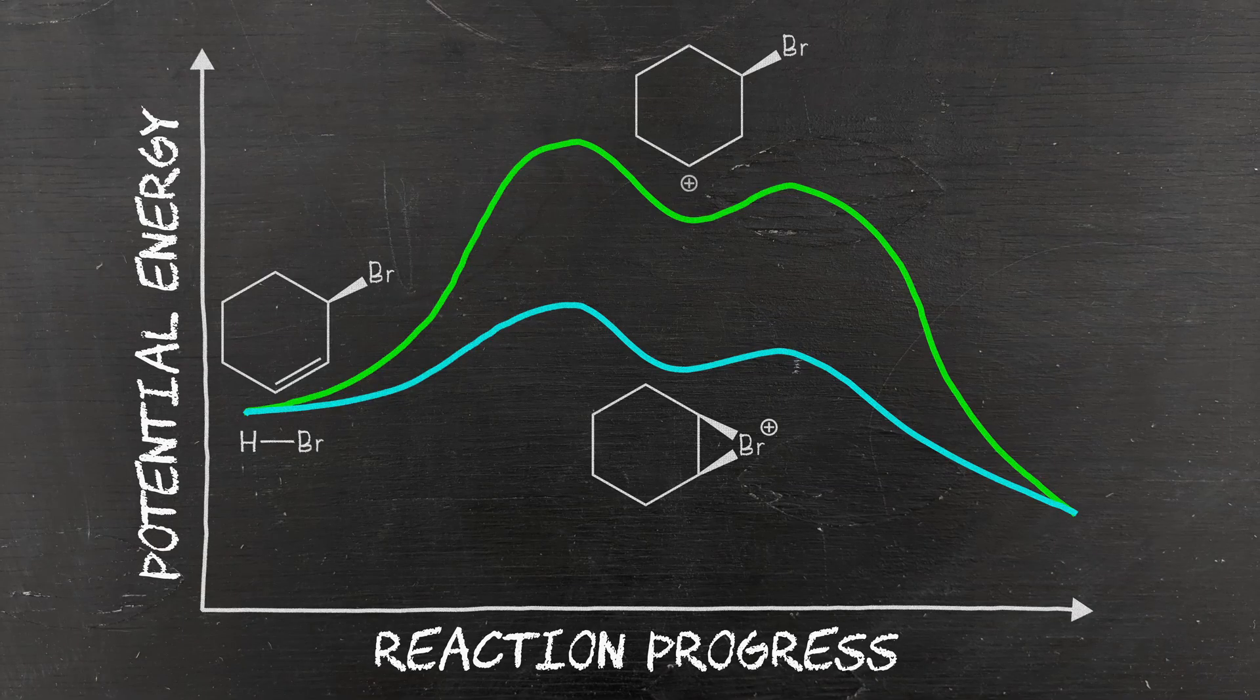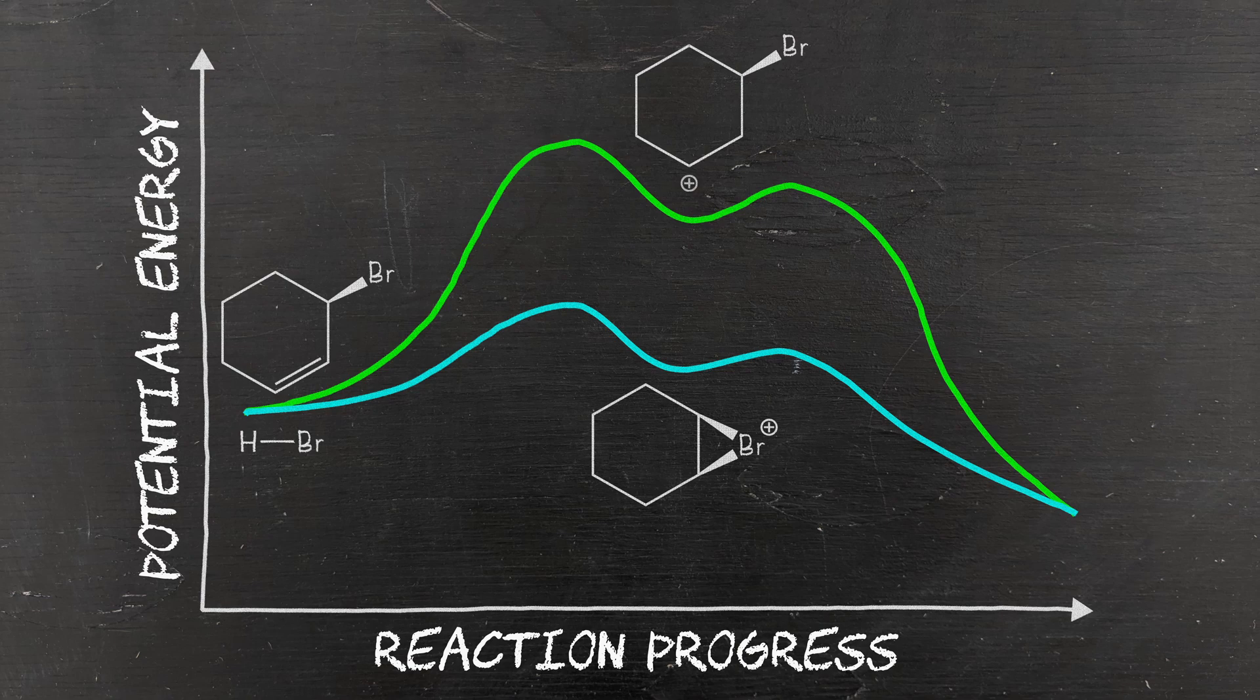But once we switch to having bromine attached to the ring, now there is a difference, and the bromonium ion pathway is lower in energy than the carbocation pathway. Once again, because it's quicker to run to the top of a hill than it is to get to the top of the mountain, this is the pathway that is primarily followed, and we only observe the one major product of trans-1,2-dibromocyclohexane.